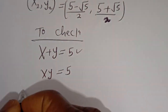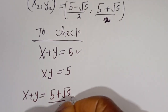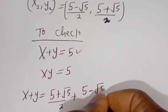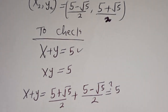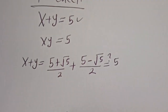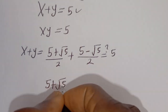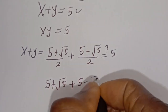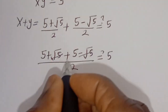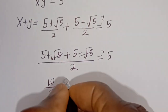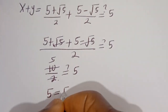Let's verify the sum: (5 plus root 5 over 2) plus (5 minus root 5 over 2) must equal 5. The root 5 terms cancel, leaving (5 plus 5) over 2, which is 10 over 2 equals 5. The left-hand side 5 equals the right-hand side 5, which is true.